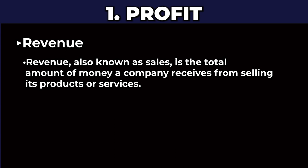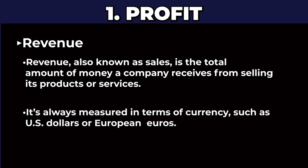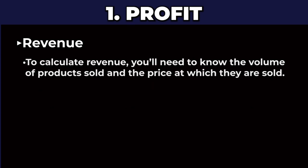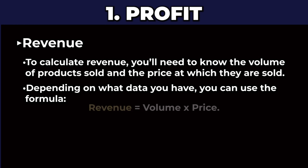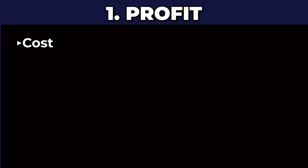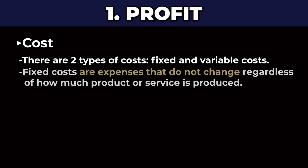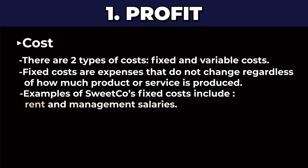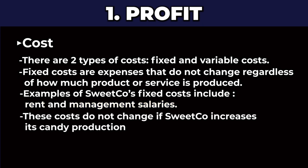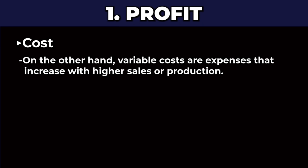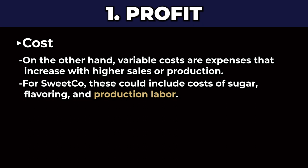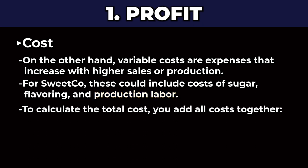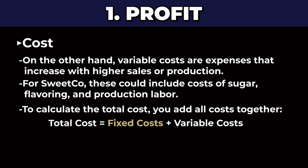Revenue, also known as sales, is the total amount of money a company receives from selling its products or services, always measured in a currency like US dollars or euros. To calculate revenue, you need the volume of a product sold and at what price: Revenue = Volume × Price. The other side of the profit equation is cost. Fixed costs are expenses that do not change regardless of how much product is produced — for Sweetco, this includes rent and management salaries. Variable costs go up the more production or sales you have — for Sweetco, this includes sugar, flavoring, and production labor. Total Cost = Fixed Costs + Variable Costs.